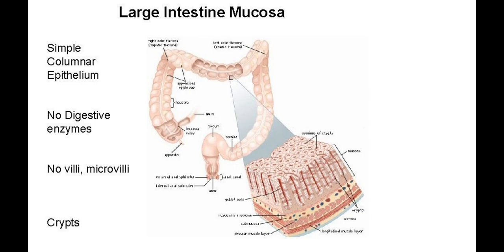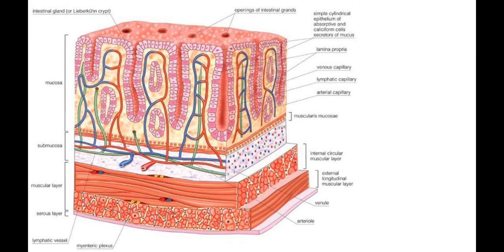The large intestine is presented here schematically, showing the structure of these crypts. They are not very long, but they also have a single-cell epithelium layer, blood capillaries, and lymphatic capillaries — all the same as in the small intestine.